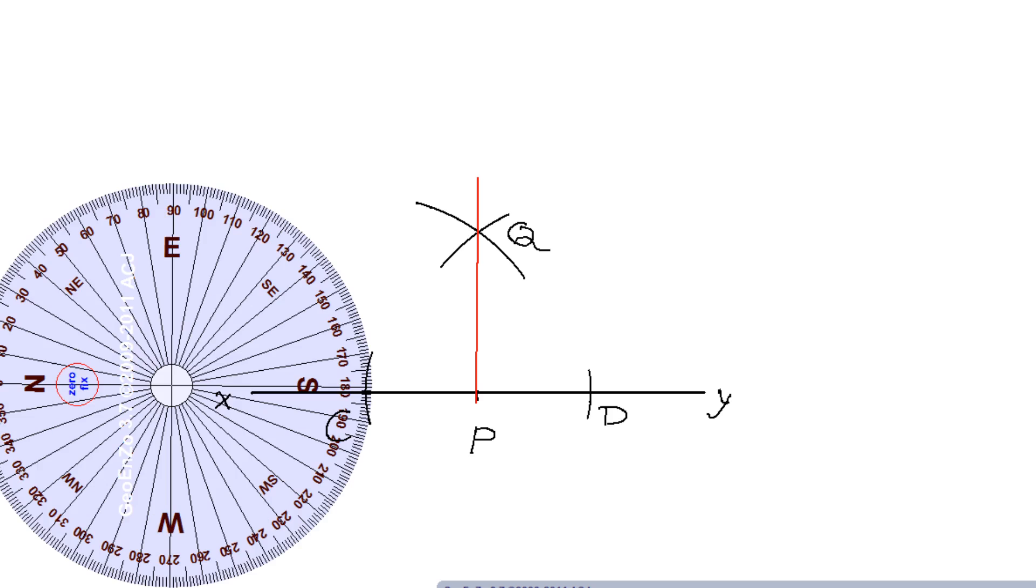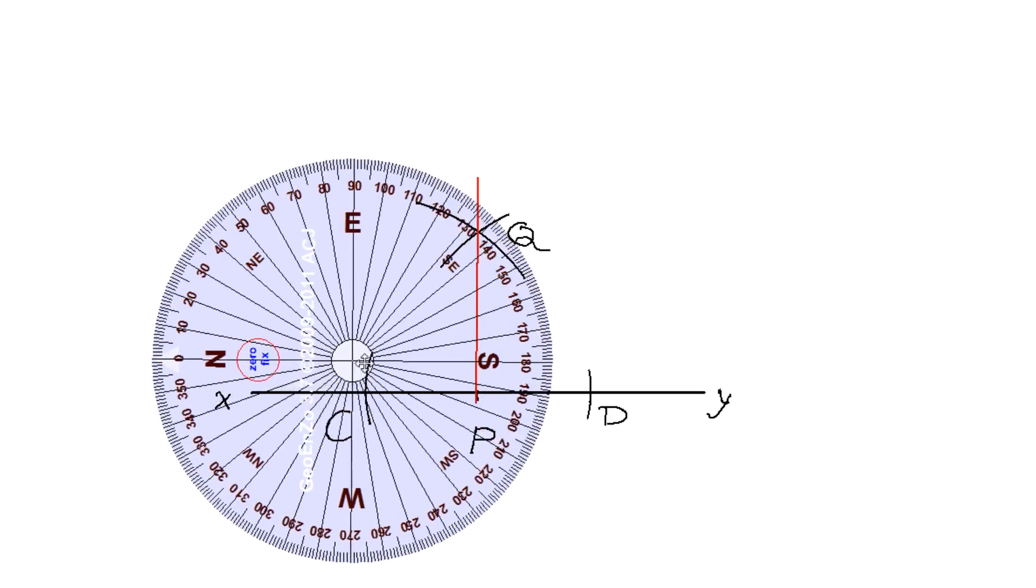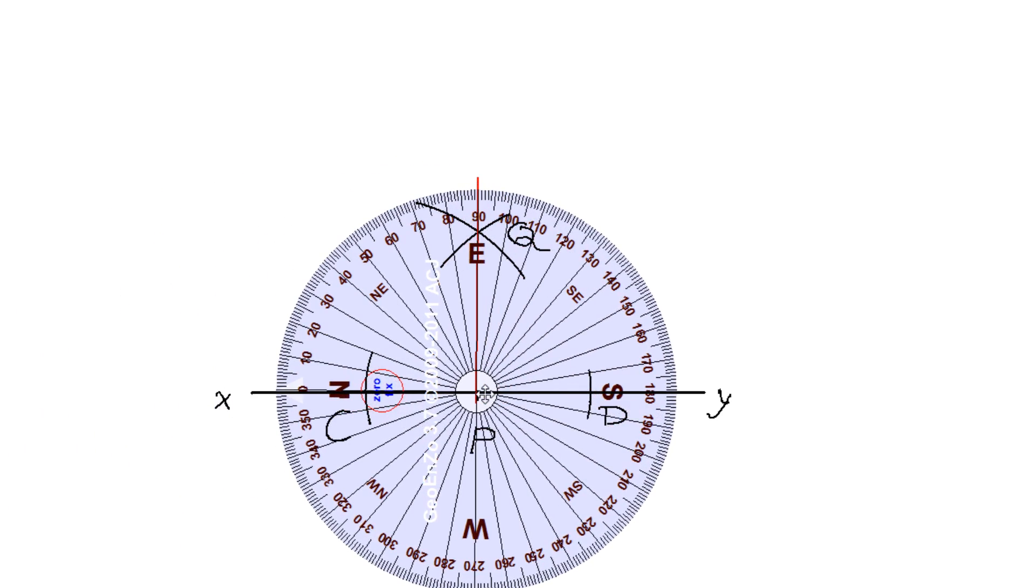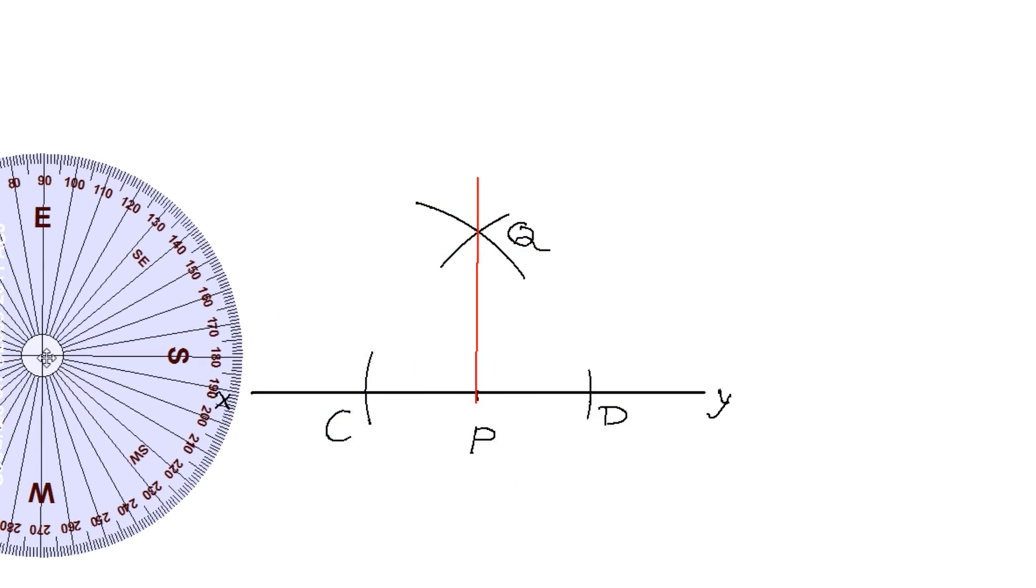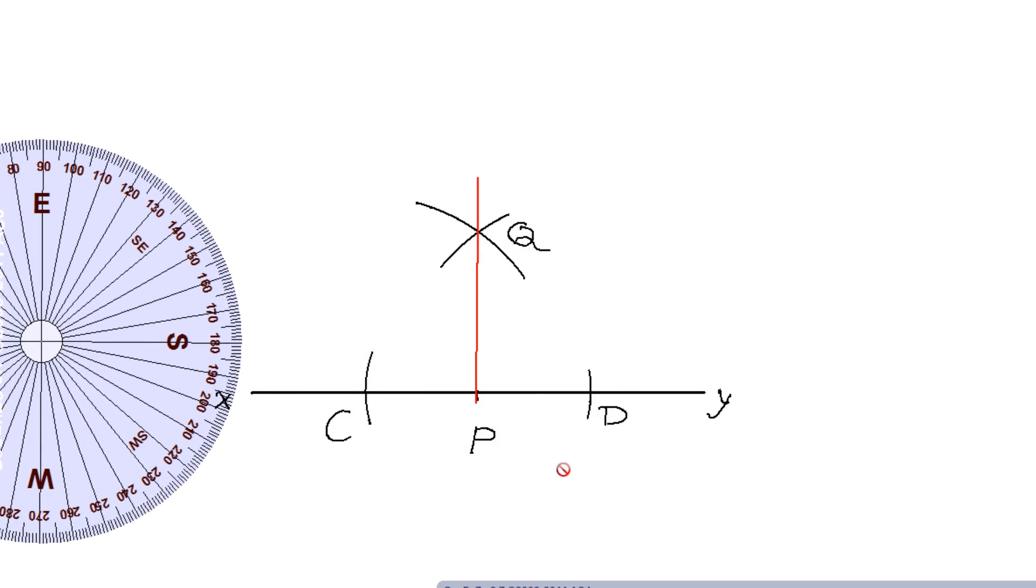Now you can check it out. Take this protractor and put it exactly here and check whether the angle is 90 degrees or not. Yes, see, exactly the angle is 90 degrees. So this is the required line PQ, which you have drawn perpendicular at point P on line XY.